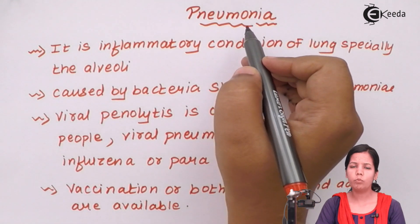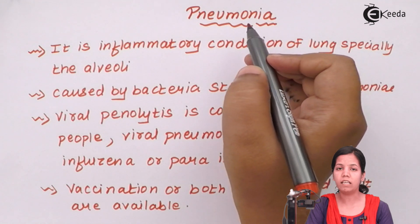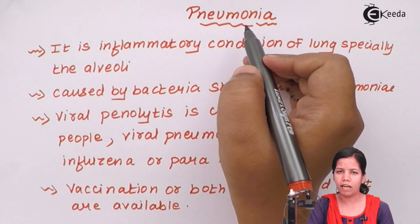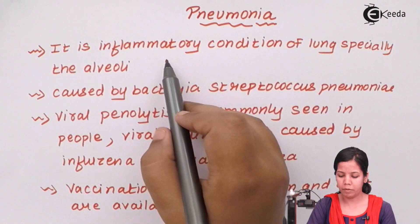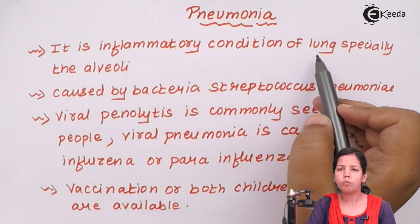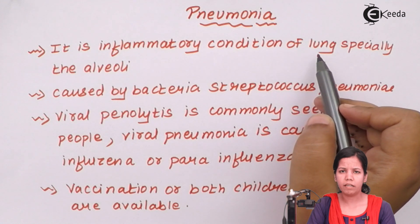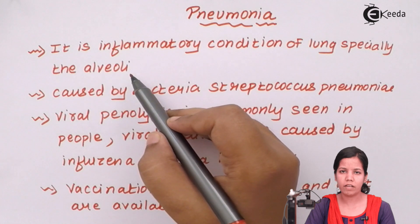Pneumonia is a condition most commonly seen in young children and rarely seen in adults, though it does occur in about 1-2% of adults. It is an inflammatory condition of the lung — more specifically, the alveoli get infected. Essentially, the respiratory tract gets infected.